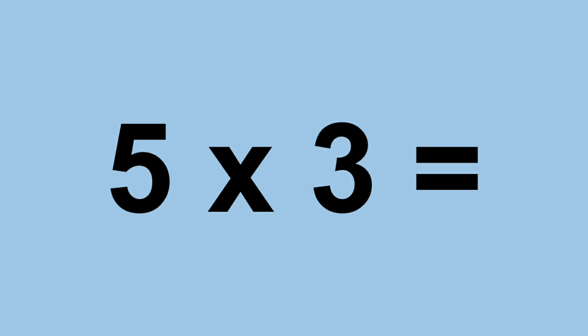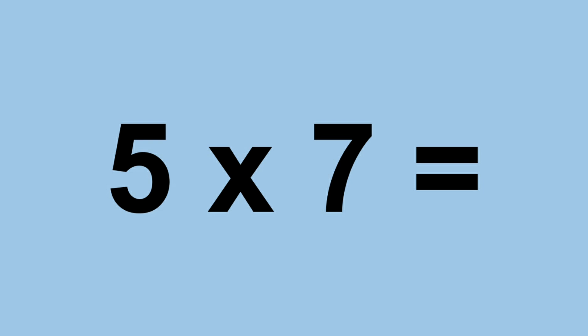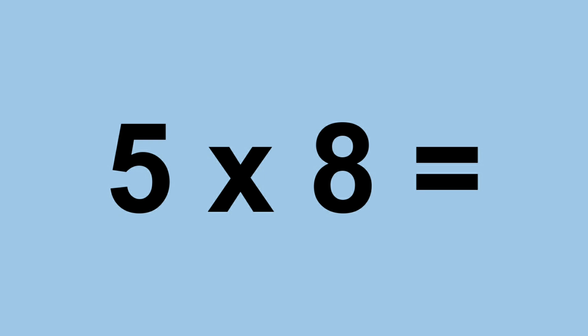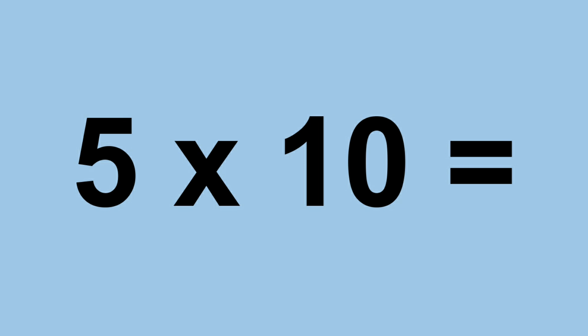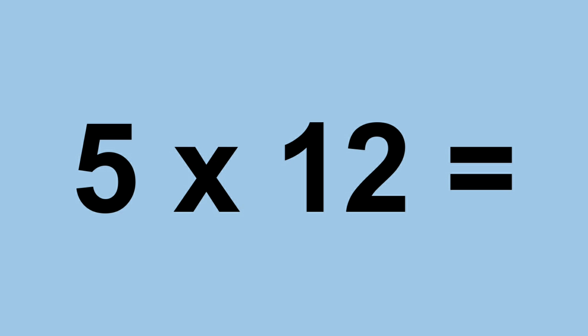Five times three equals fifteen. Five times four equals twenty. Five times five equals twenty-five. Five times six equals thirty. Five times seven equals thirty-five. Five times eight equals forty. Five times nine equals forty-five. Five times ten equals fifty. Five times eleven equals fifty-five. Five times twelve equals sixty.